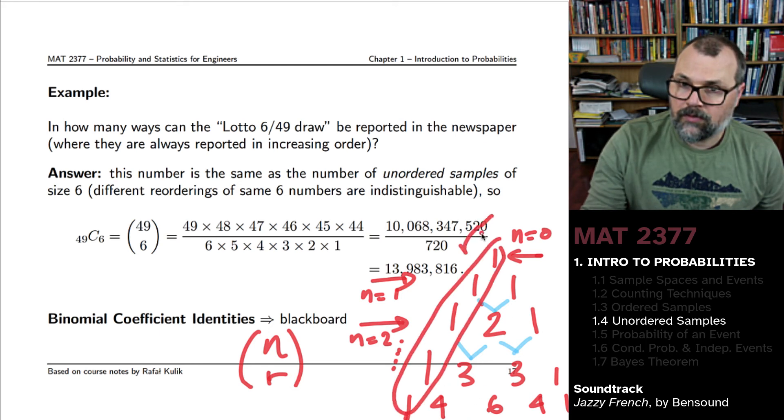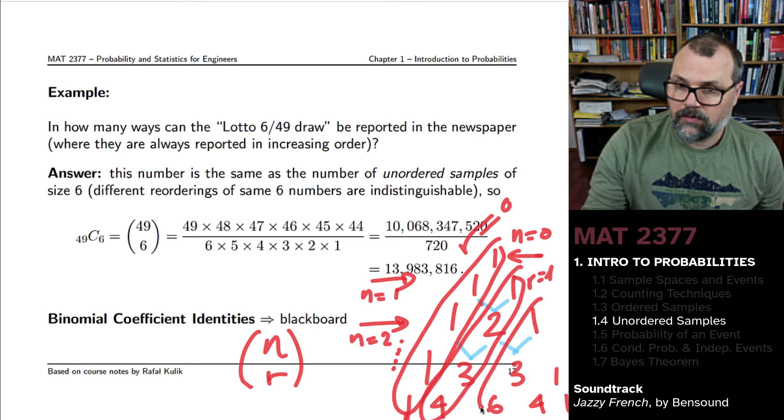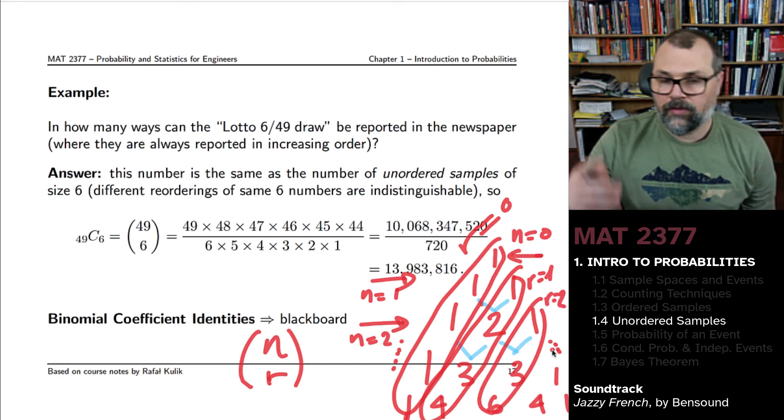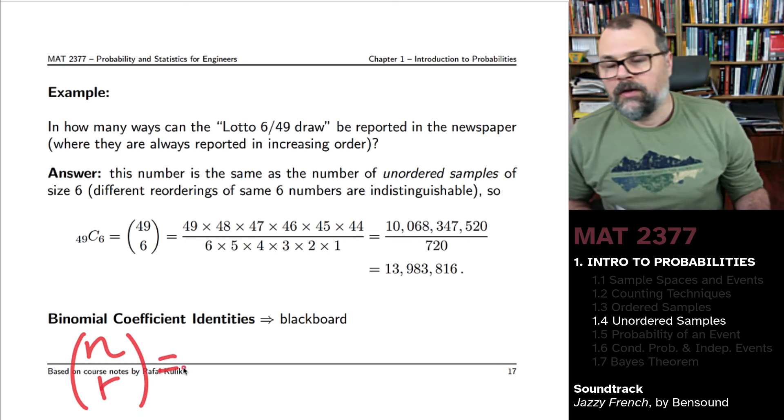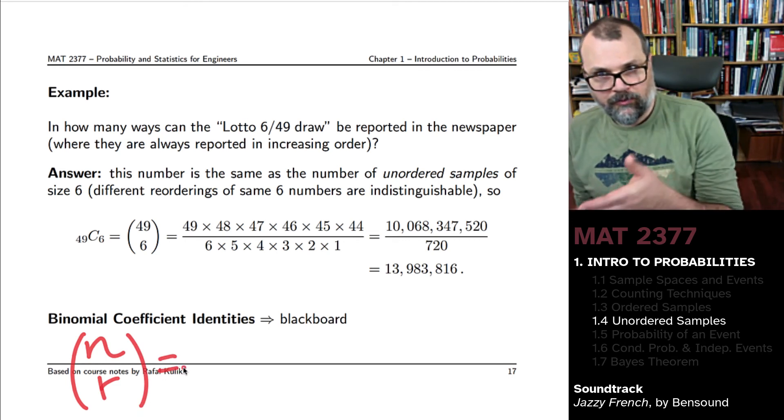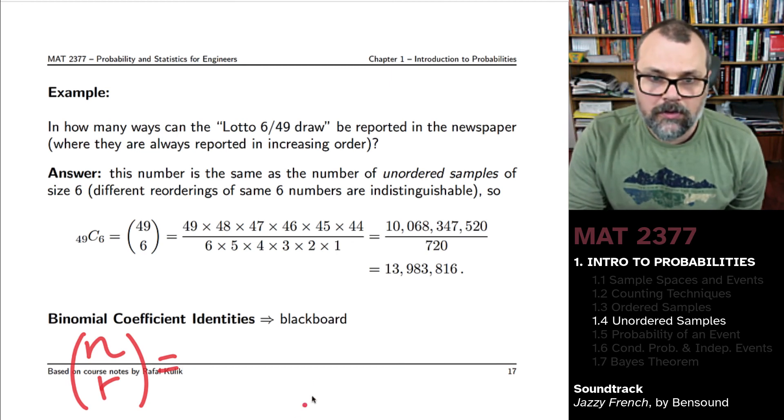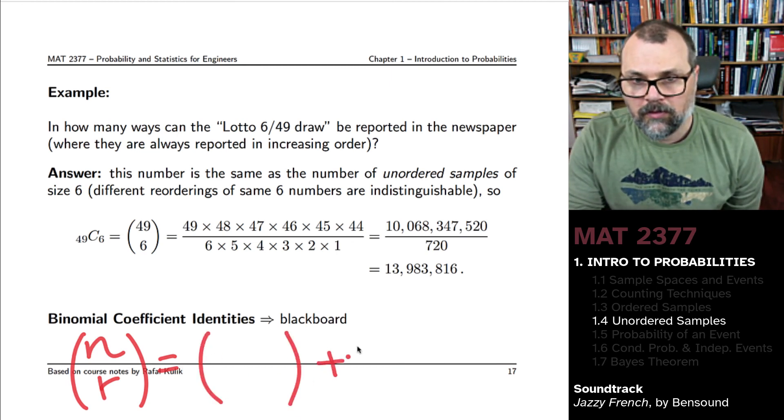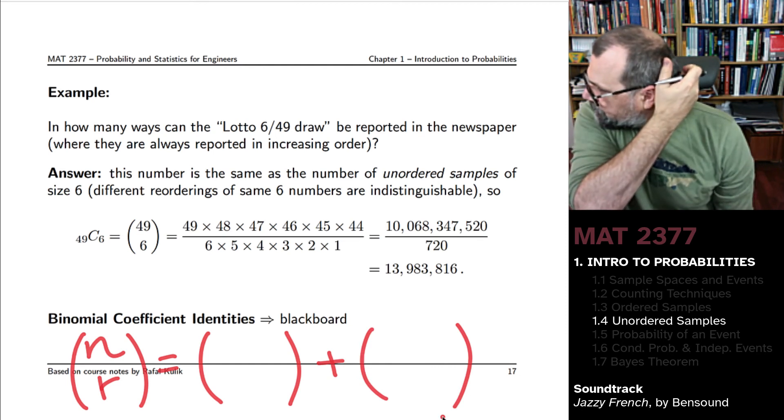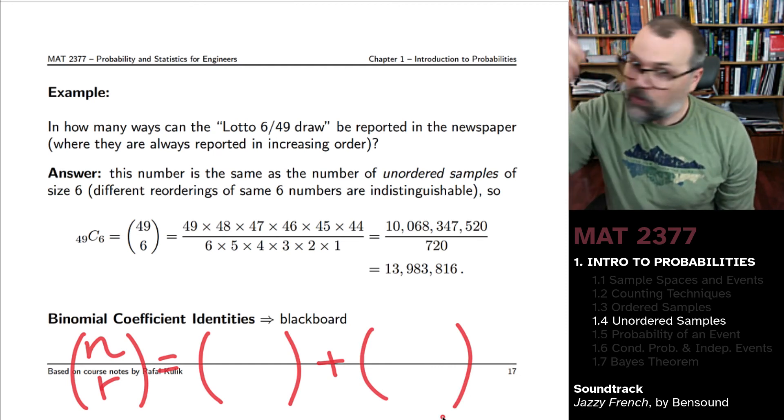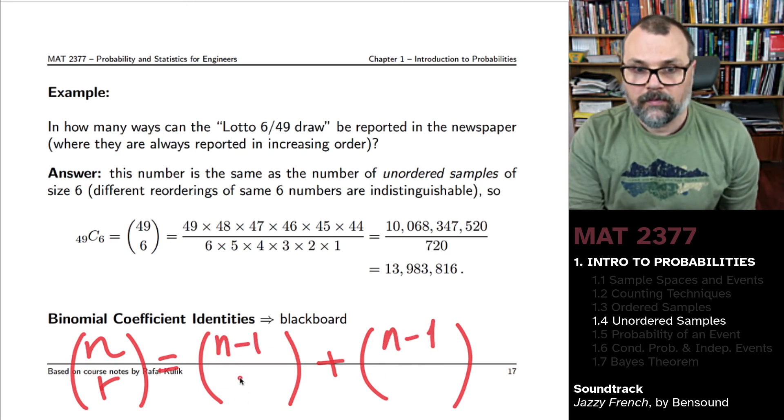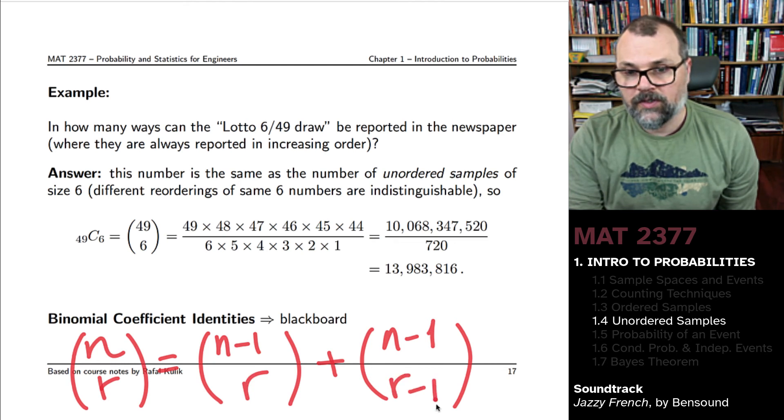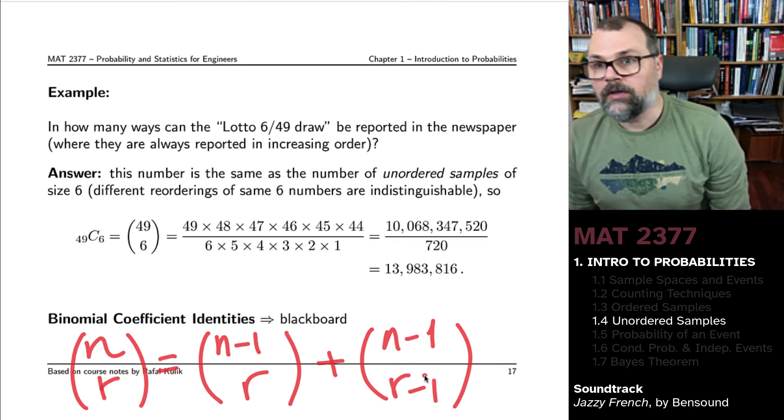What this tells you is that the binomial coefficient for any entry is the sum of two entries from one line above. That's basically the one on the left plus the one on the right. And there's also a fair amount of symmetry in here.